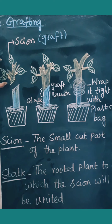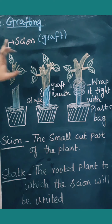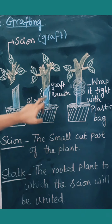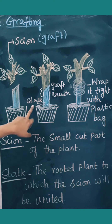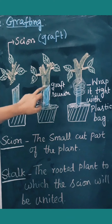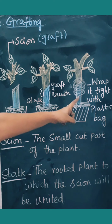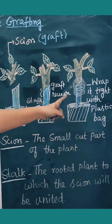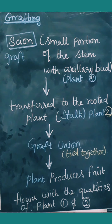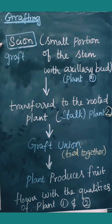In grafting we need to understand two important terms: scion and stock. The scion is the stem of the plant — it is the graft which is transferred to the plant that is already rooted in the soil. The rooted plant is called the stock. The scion is transferred to the stock and they are wrapped together using a plastic bag, and desirable conditions such as moist soil and nutrients are provided.